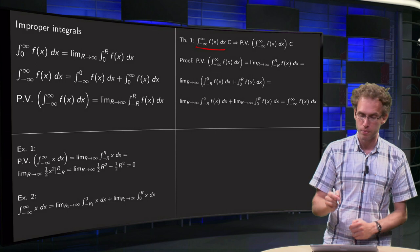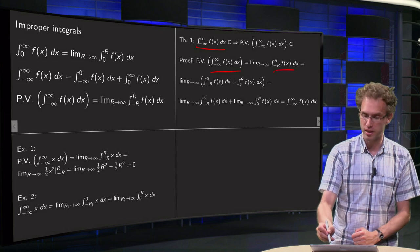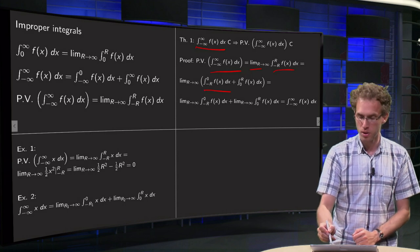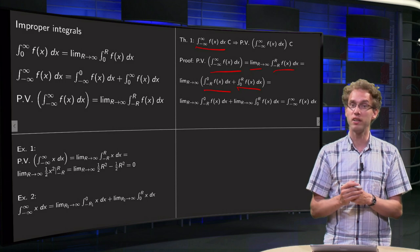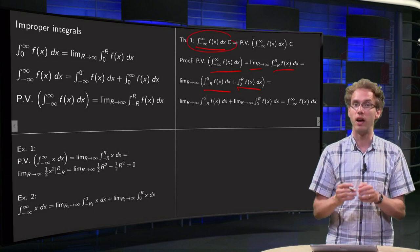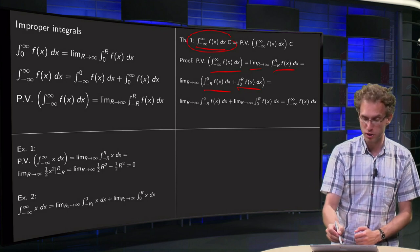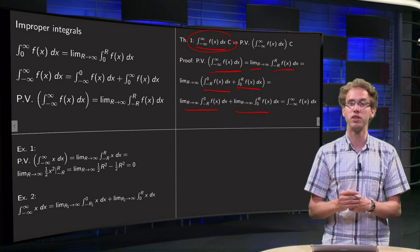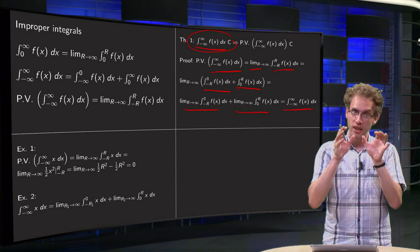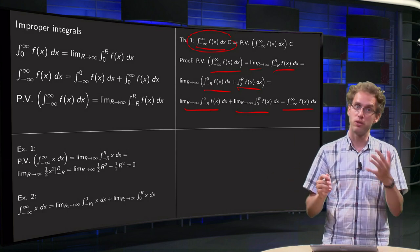Why is this true? The principal value of the integral from minus infinity to infinity means integrating from minus r to r and then taking the limit. We can split the integral from minus r to r into two parts — minus r to zero plus zero to r — and then take the limit as r goes to infinity. Because the improper integral converges, both limits converge individually, and together they equal by definition our integral from minus infinity to infinity. So if the improper integral converges, so does the principal value, but not necessarily the other way around.